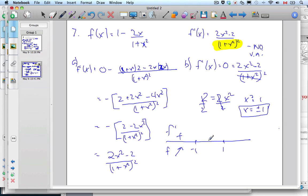If I plug in a number between here, say x = 0, that's 0 - 2 which is negative over a positive number. So that's decreasing.